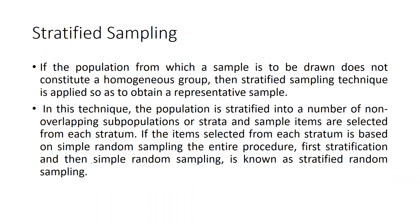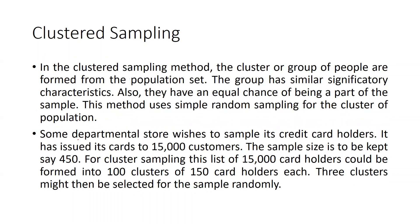In stratified sampling, the population is divided into non-overlapping subpopulations or strata, and sample items are selected from each stratum. If items are selected from each stratum based on simple random sampling, the entire procedure — first stratification and then simple random sampling — is known as stratified random sampling.